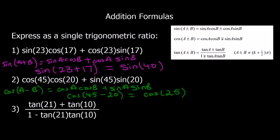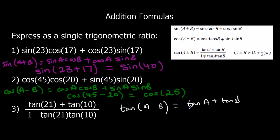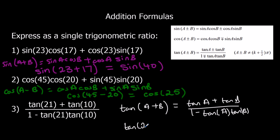And finally, tan. We know it's going to be tan(A + B) or tan(A − B). If we've got a plus here, that means we're using the top signs, so we've got a plus on the top and a minus on the bottom. A is 21 and B is 10, so we've got tan(21 + 10), which is tan 31.